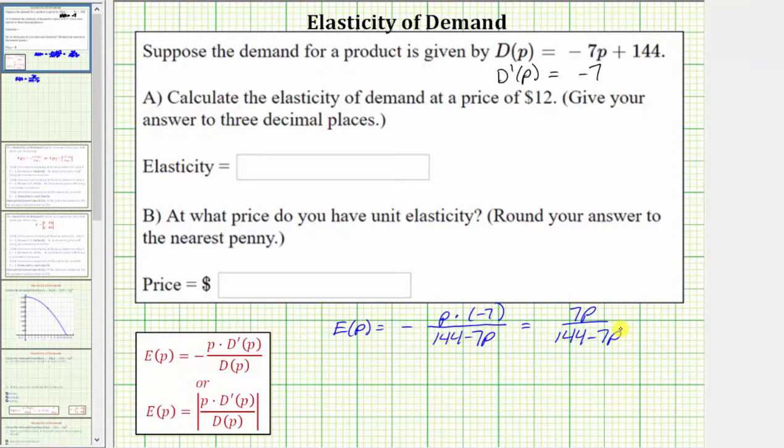And now we can determine the elasticity of demand at a price of $12, which is e of 12. e of 12 equals seven times 12 divided by the quantity 144 minus seven times 12. Seven times 12 equals 84. This is equal to 84 divided by the quantity 144 minus 84, which equals 84 divided by 60, which equals 1.4. The elasticity is 1.4 at a price of $12.